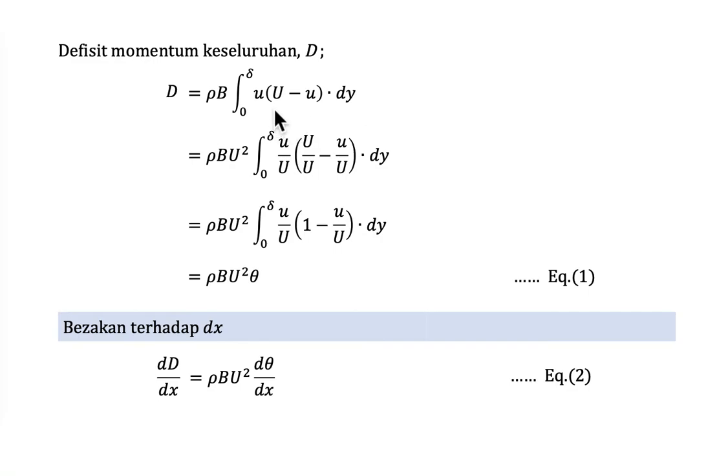Then we rearrange the terms here by adding U square. So we could put U square over U square. We bring the over U square here. So and then we could simplify this term into U over U times 1 minus U over U. So this equation must look familiar to you because this equation is actually equal to momentum thickness theta.